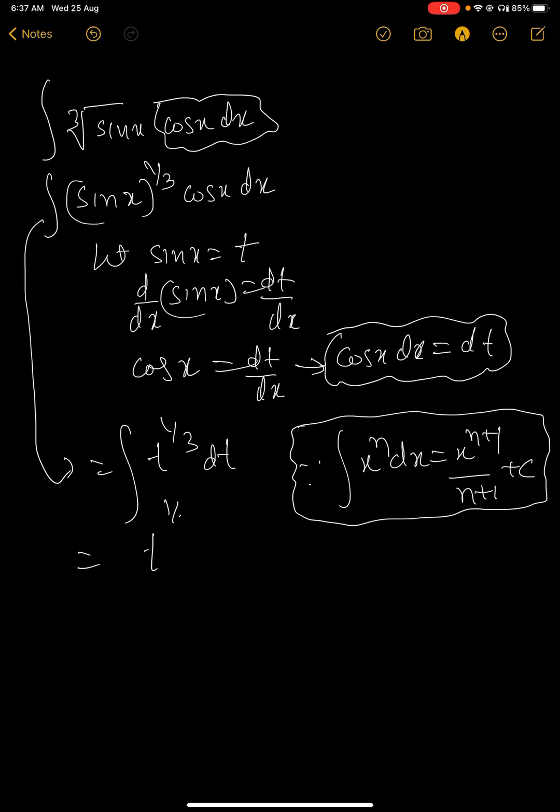t to the power of 1/3 plus 1 divided by 1/3 plus 1 plus c. This equals t to the power of 4/3 divided by 4/3. The 3 goes into the numerator, giving 3t to the power of 4/3 divided by 4.